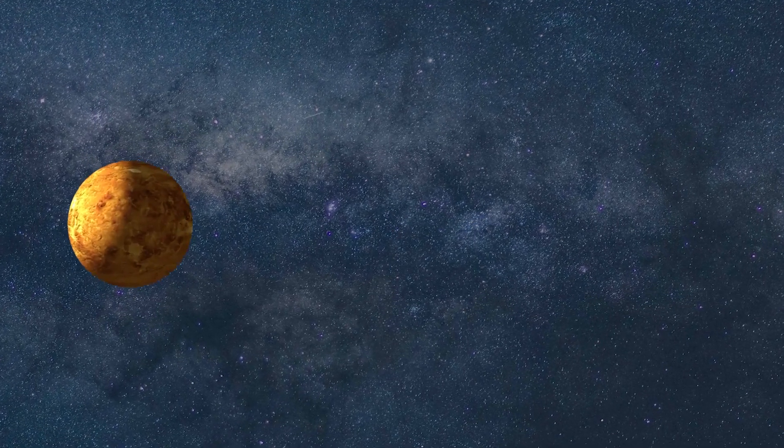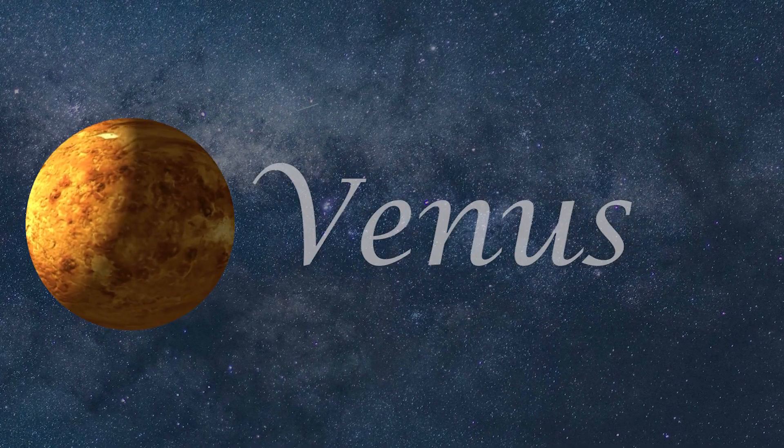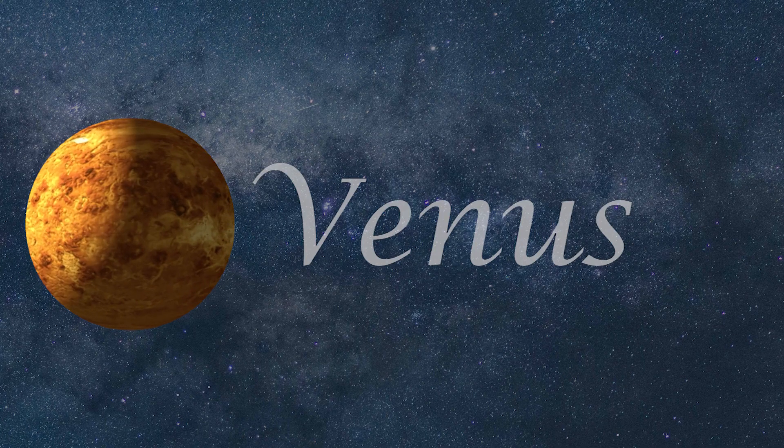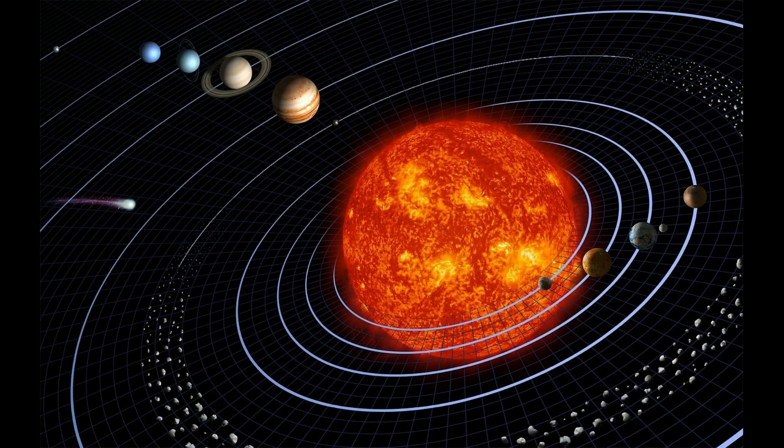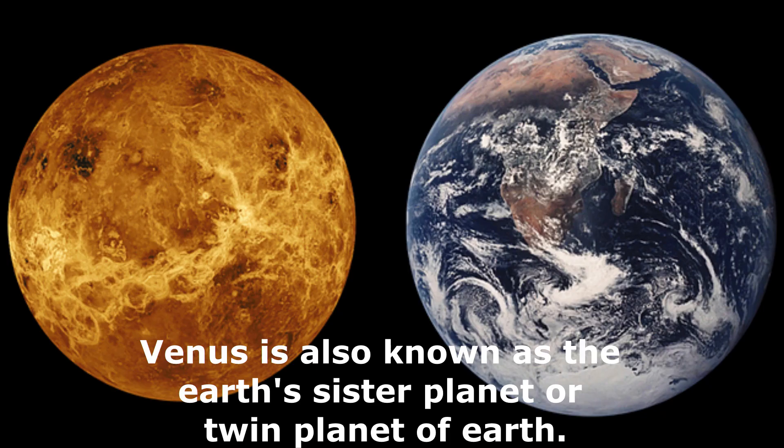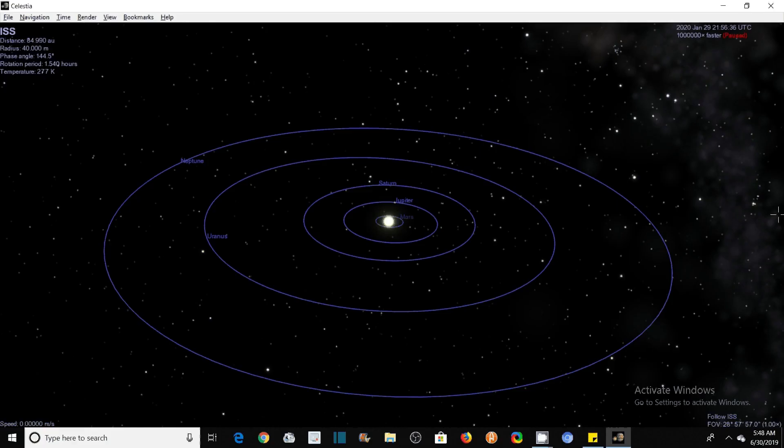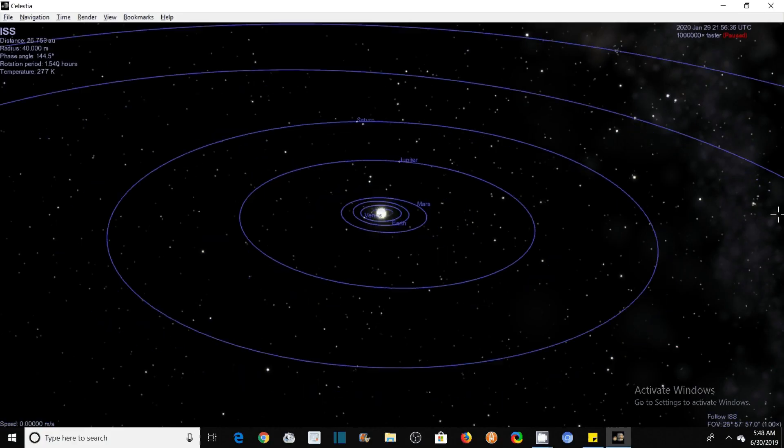In this video, you will learn many interesting facts about the beautiful planet Venus. Venus is the second planet from the Sun. It is sometimes also known as the Earth's sister planet or twin planet of the Earth, as it is similar to Earth in size and mass.